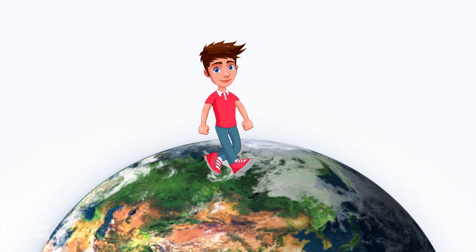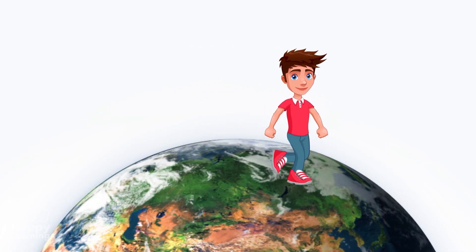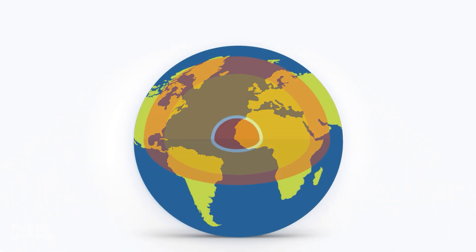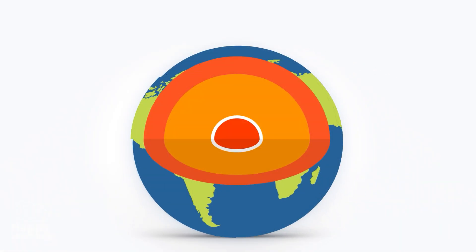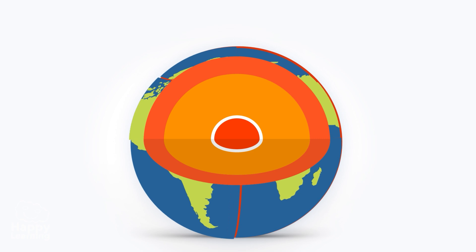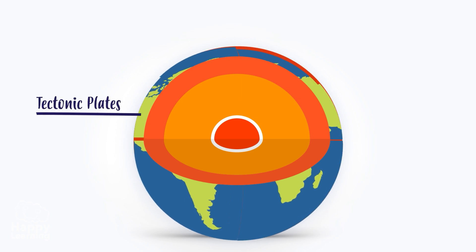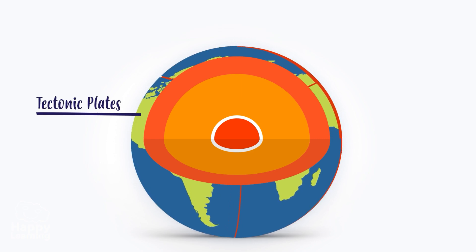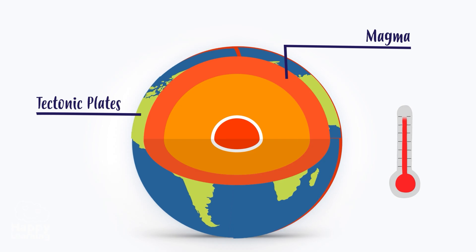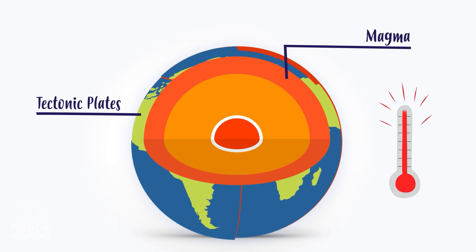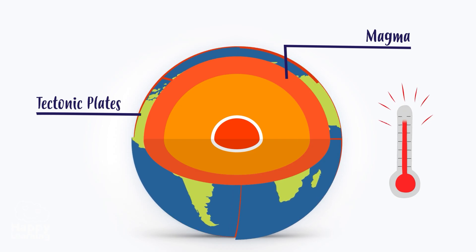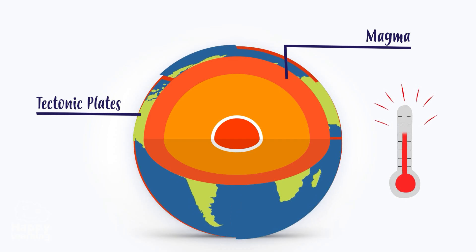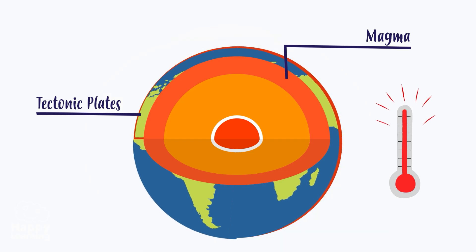Did you know that the floor we walk on lies over gigantic rocky plates that look like a jigsaw puzzle and are called tectonic plates? These plates float over magma, an extremely hot material that is found in liquid or viscous form because of its tremendously hot temperature.